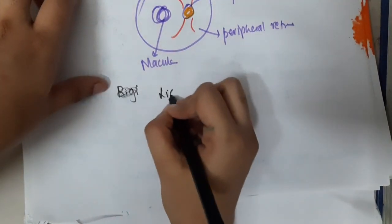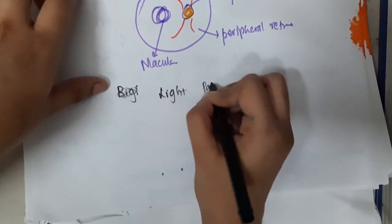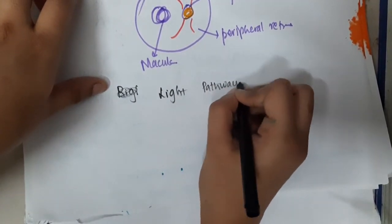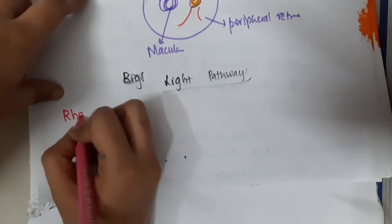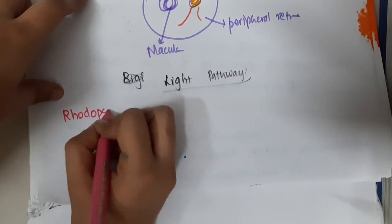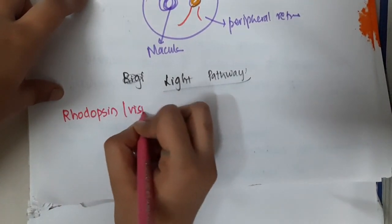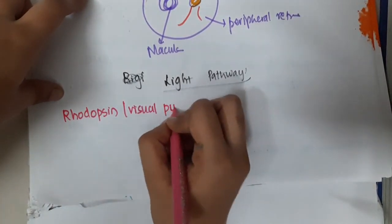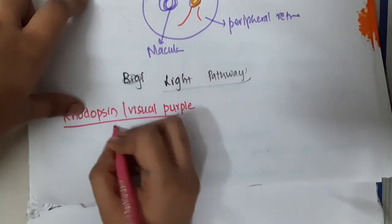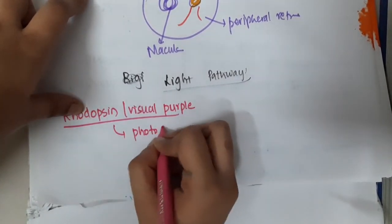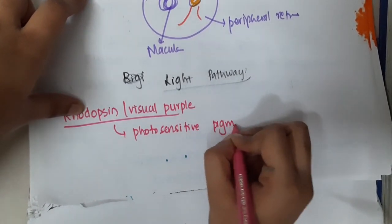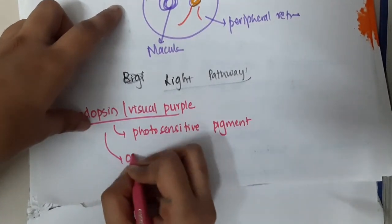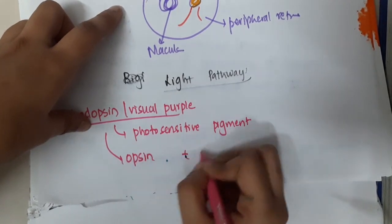Hello friends. Let us now learn about the light pathway. In the light pathway, first we have rhodopsin, also called visual purple. Rhodopsin or visual purple is the photosensitive pigment, and it is composed of opsin and retinal.